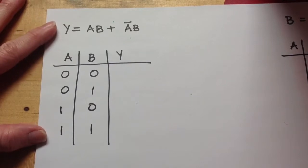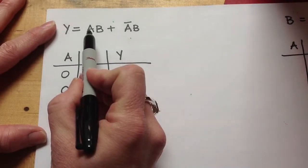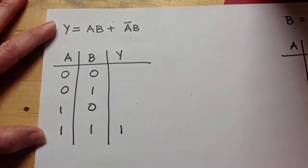And so the first line I'm looking for is a and b. So that would be a one in a and a one in b, and I find that on the bottom, and I put a one in the y column.